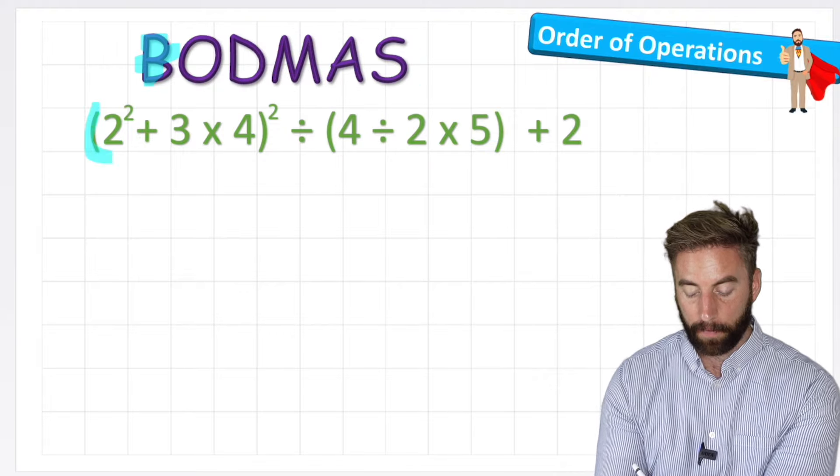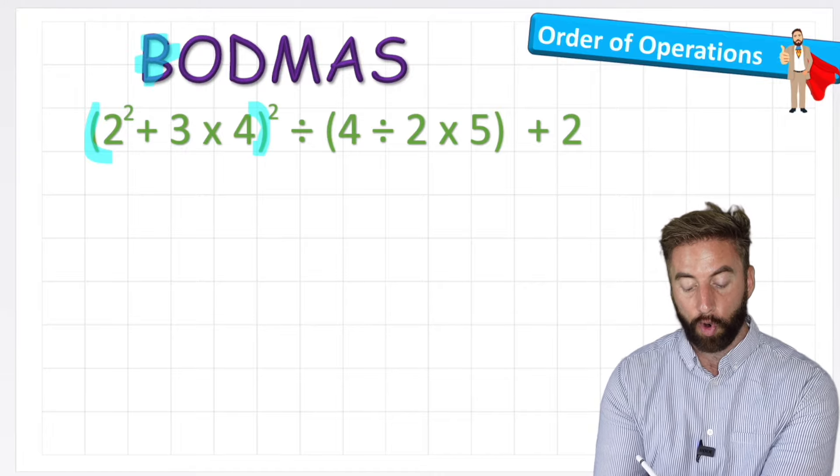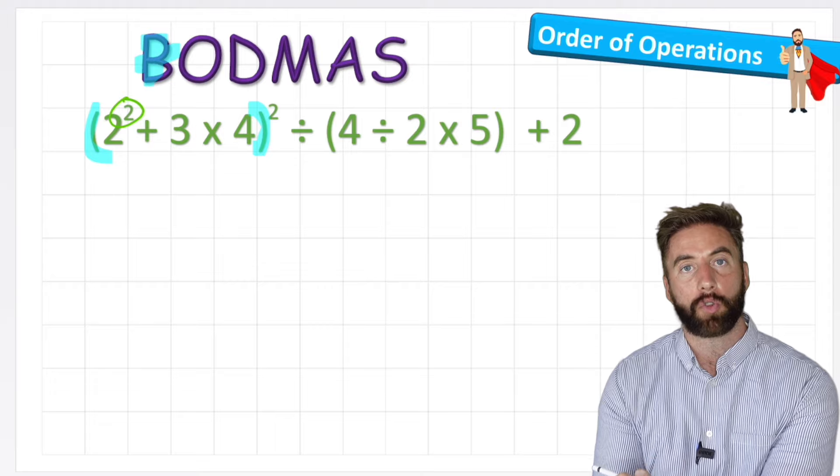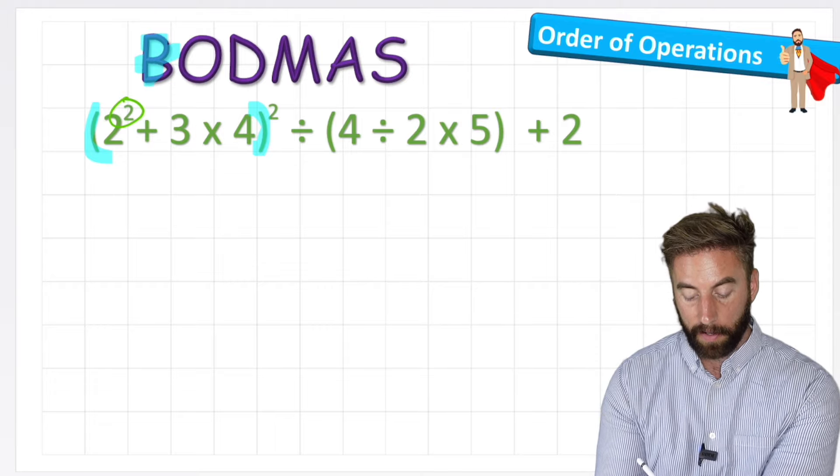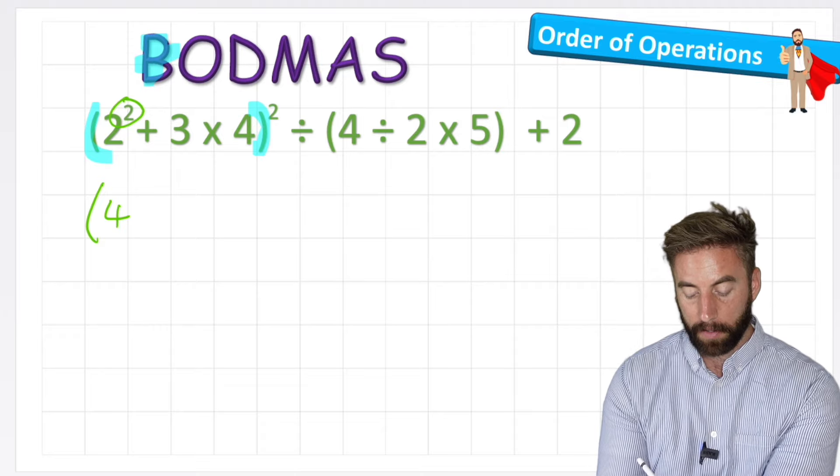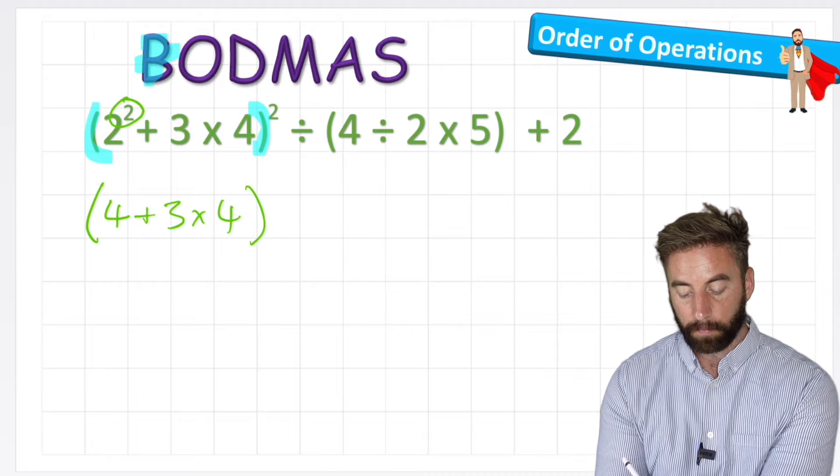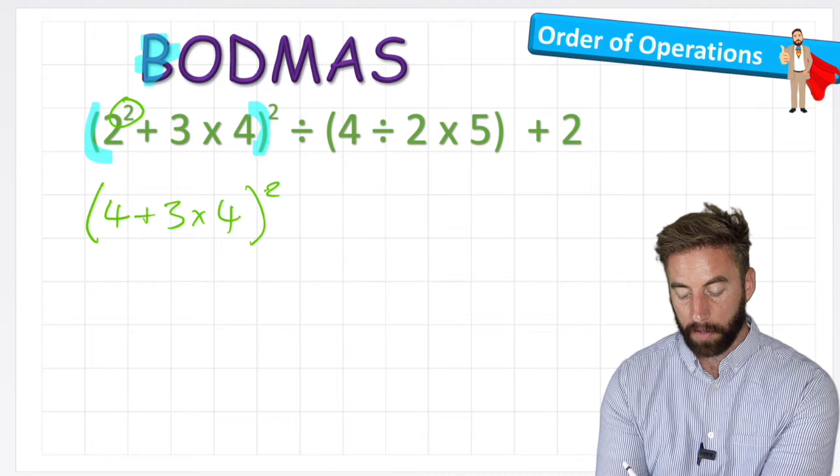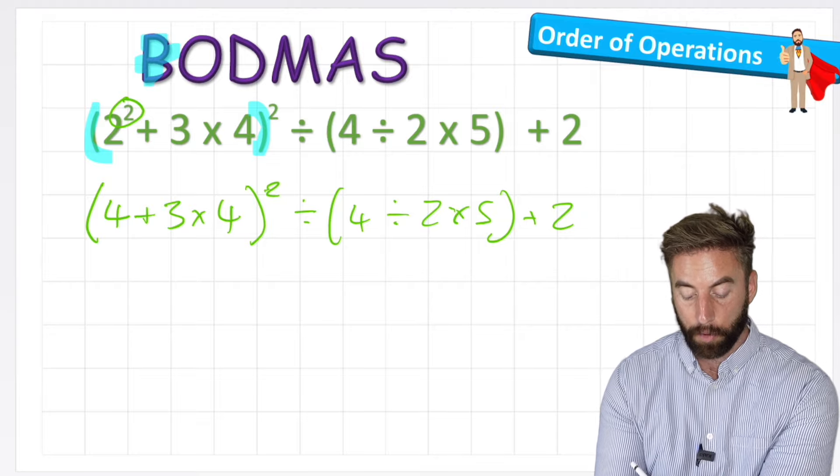I'm going to start with this bracket first of all. Now in this bracket, I can already see that I have an order up here. So I'm going to do that part of the bracket first. So now my bracket would read 2 times 2, which is 4, plus 3 times 4 to the power of 2. Looking back at my first bracket, there's no division in this question, so I can move to the multiplication.